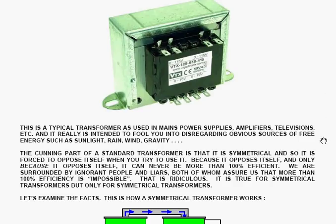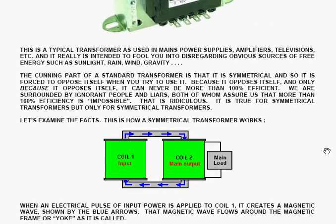The cunning part of its standard transformer is that it's symmetrical, and so it's forced to oppose itself when you try to use it. Because it opposes itself, and only because it opposes itself, it can never be more than a hundred percent efficient. Let's examine the facts.